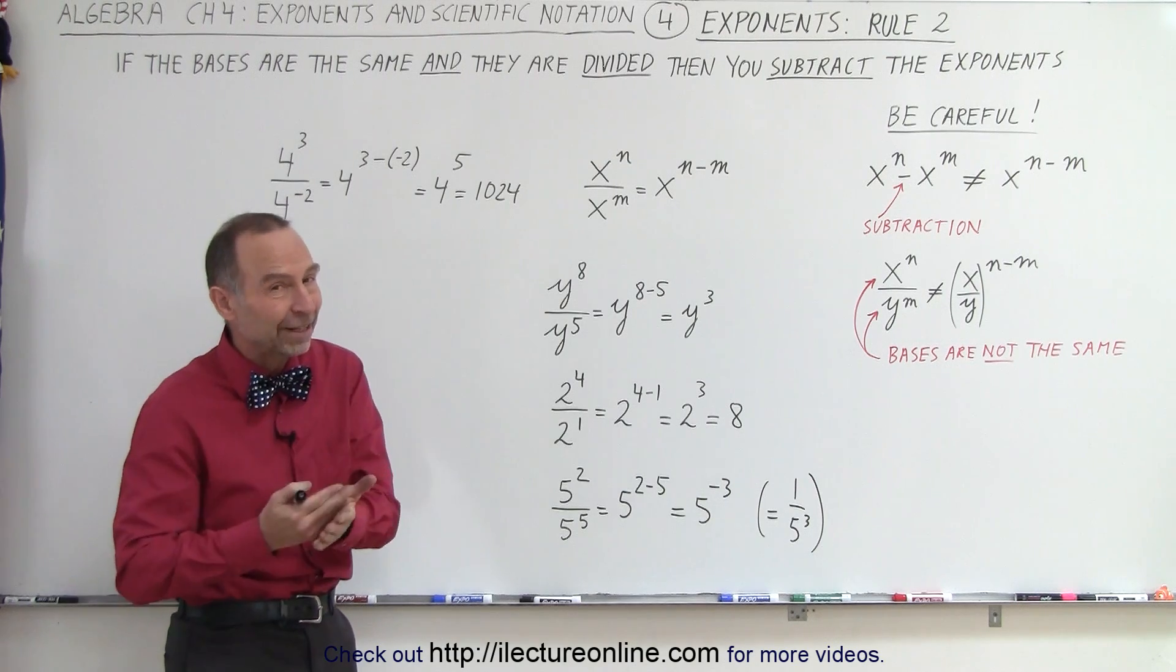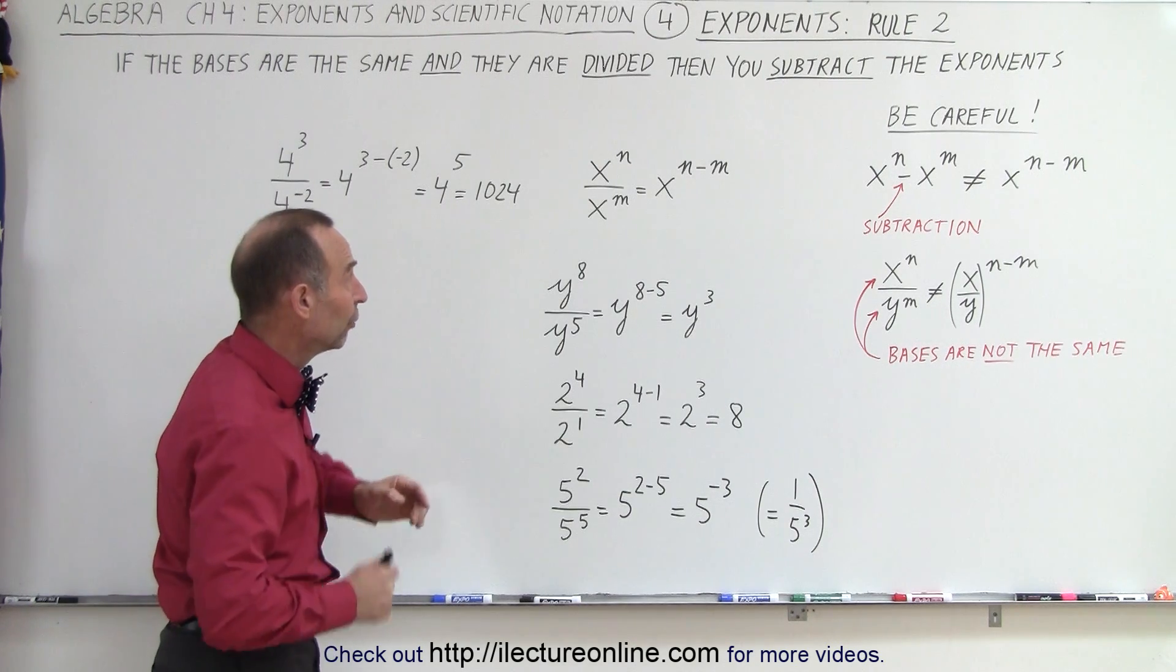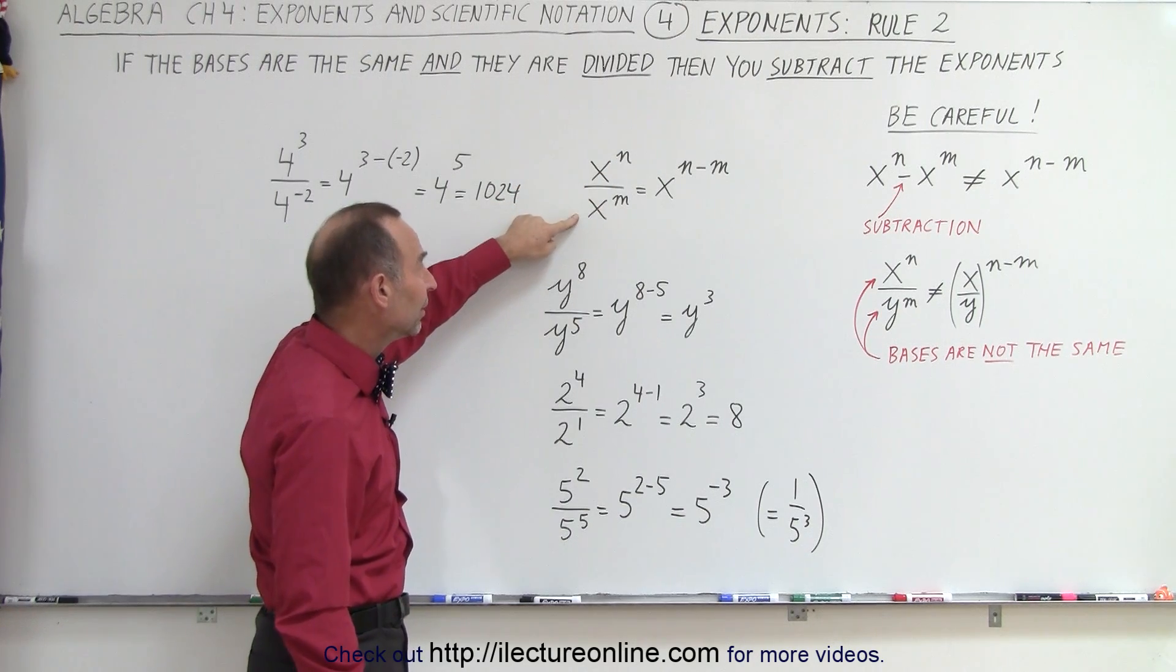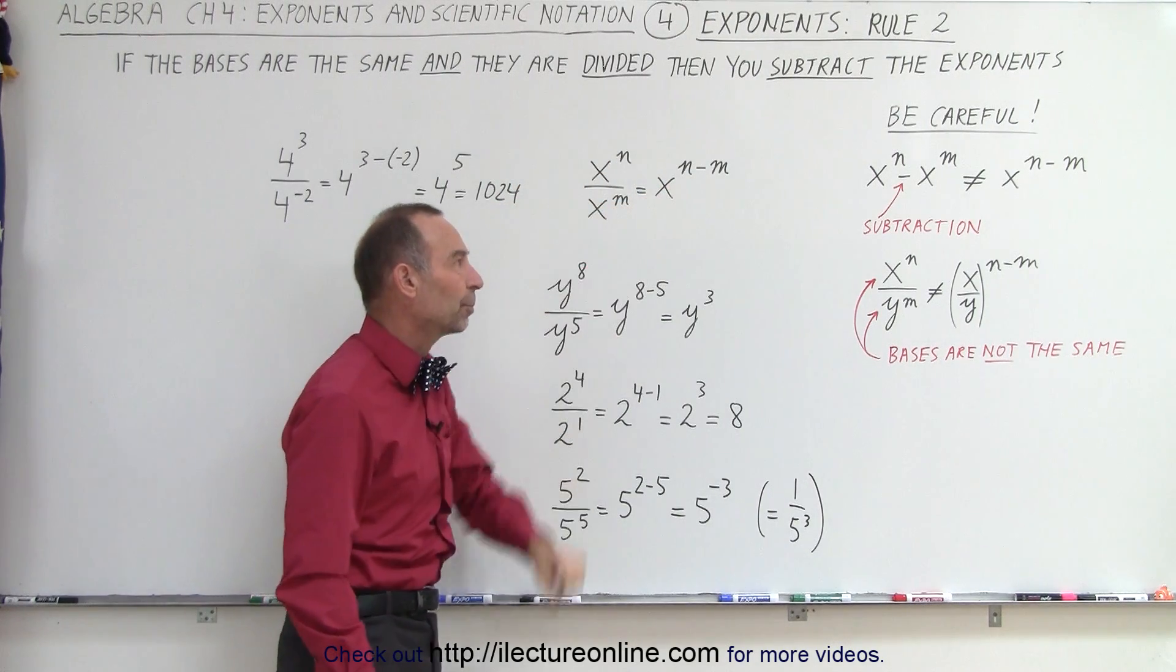Again, it's either multiplied or divided, not added or subtracted. So we have two numbers raised to exponents and they're divided, then you subtract the exponents.